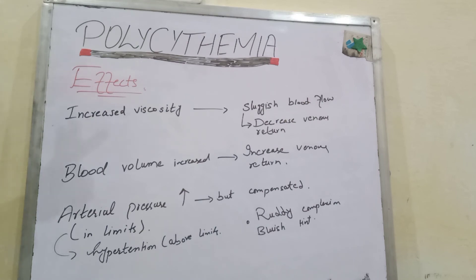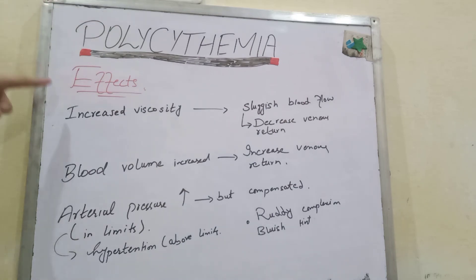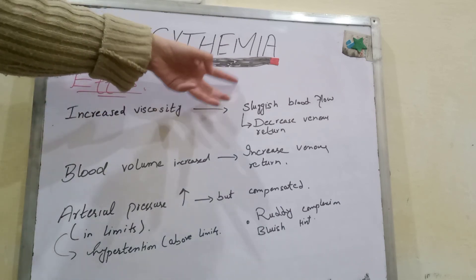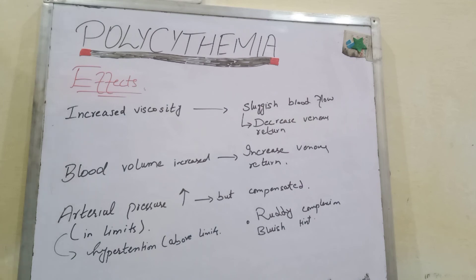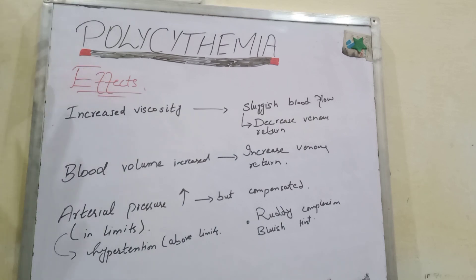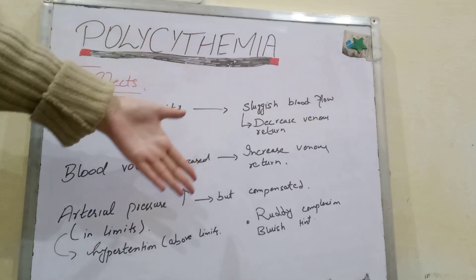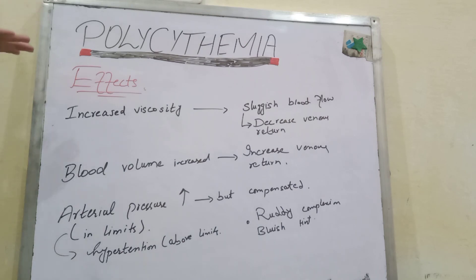Along with the ruddy complexion, there is also a bluish tint. Why is there a bluish tint? Because due to increased viscosity, the blood has become sluggish. It passes too slowly through the sub-papillary venous plexus of our skin, which is present under the skin. When there is sluggish blood flow, the hemoglobin will be deoxygenated while passing, and deoxygenated hemoglobin is dark purplish-blue in color. So persons with polycythemia show a ruddy complexion with a bluish tint — the bluish tint due to deoxygenated hemoglobin because of sluggish blood flow, and the ruddy complexion due to the increased amount of RBCs in circulation.